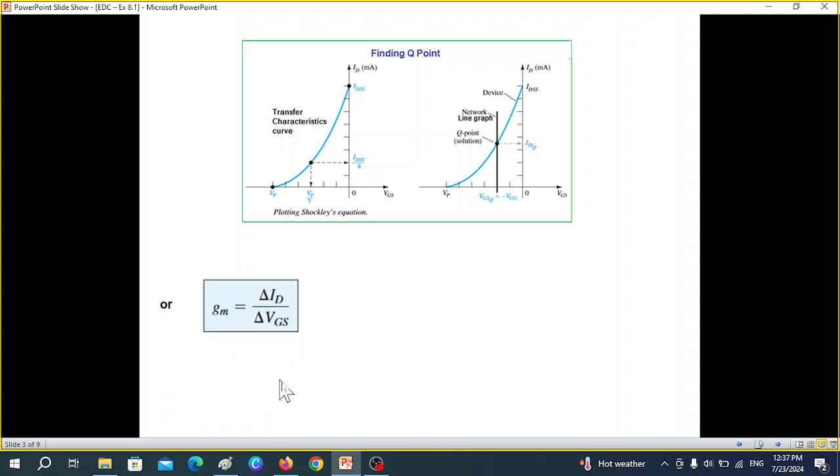Okay now from this equation we can see that this is actually the change in current and change in voltage. For that what we do is that at Q point we draw a tangent line and then we find the changes. So tangent line little up little down we get delta ID and this is delta VGS. Using these two values we can calculate GM.